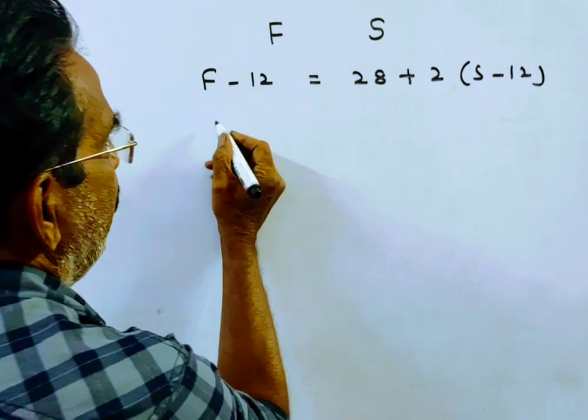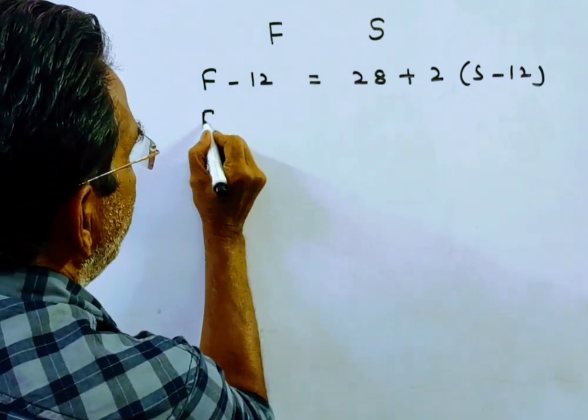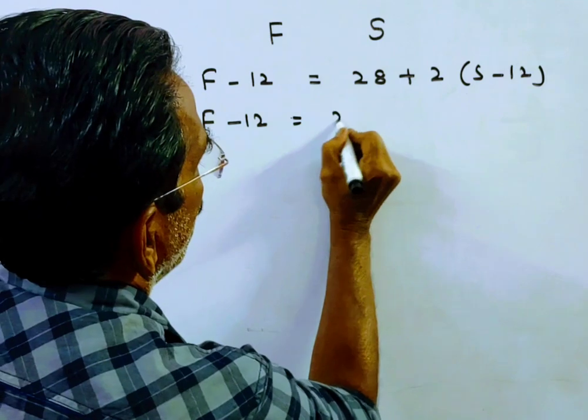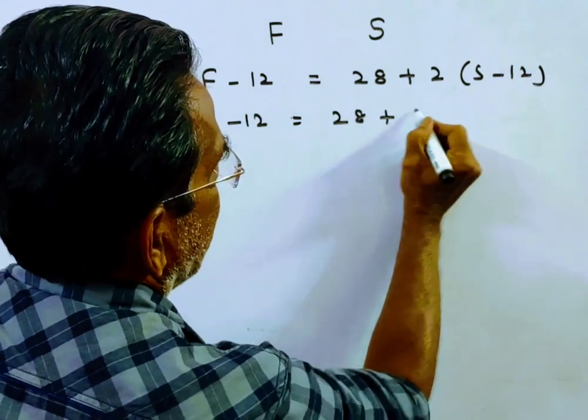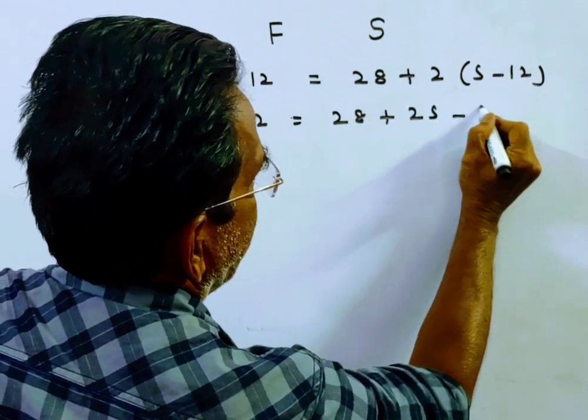This is the first statement. From this statement, F minus 12 is equal to 28 plus 2S minus 24.